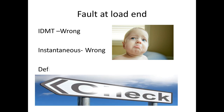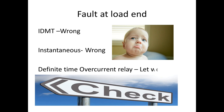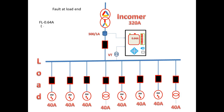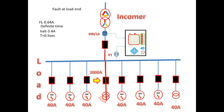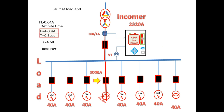When we see that IDMT and instantaneous are both not satisfactory, the third option is to select definite time. For this I am going to keep ISET equal to 3.4A and trip time is 0.5 seconds. Now the same fault occurs. Due to this fault the fault current taken is 2000A. The actual current on the secondary is 4.68A, which is greater than ISET, and the relay will pick up and start to count for 0.5 seconds.